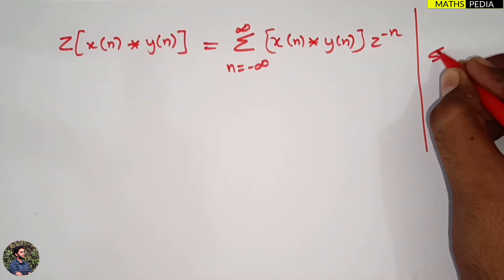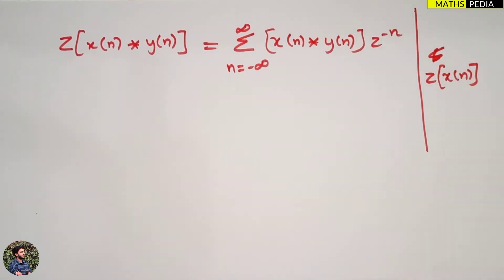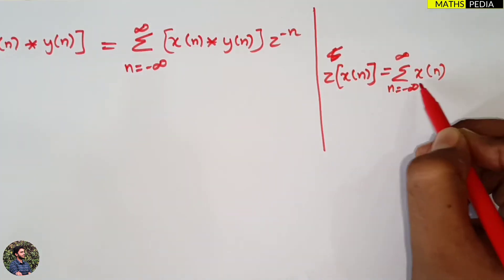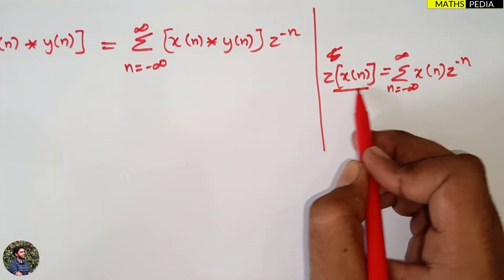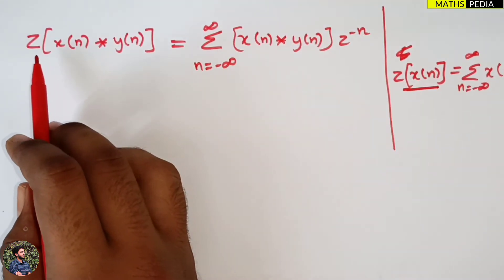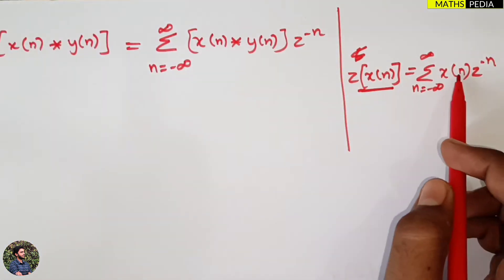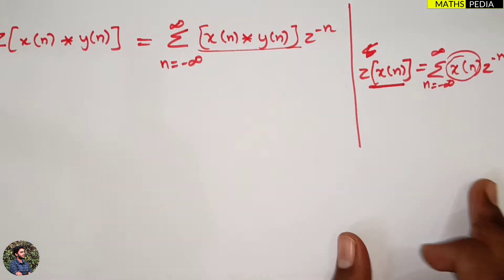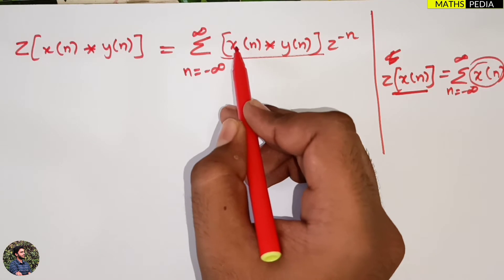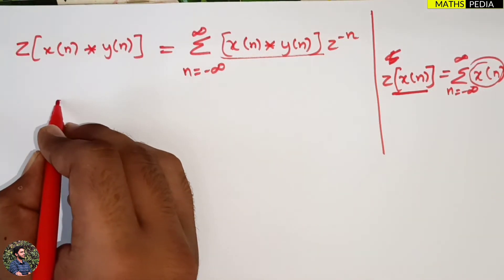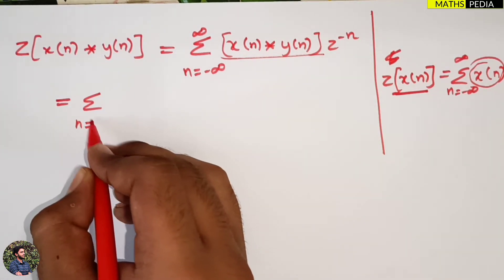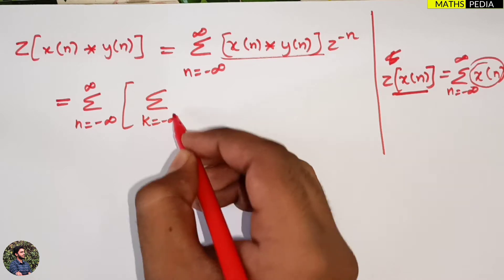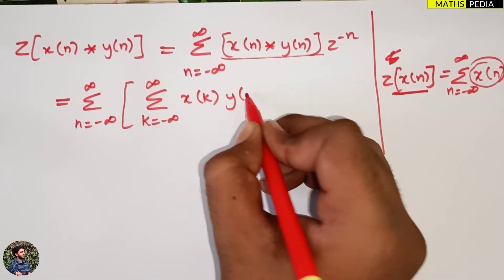The standard Z-transform of X(n) is the summation from n = −∞ to ∞ of X(n)·Z^(−n). Now, the convolution formula tells us X(n) convolved with Y(n) equals the summation from k = −∞ to ∞ of X(k)·Y(n−k). Substituting this in, the expression becomes: summation over n of [summation over k of X(k)·Y(n−k)] times Z^(−n).